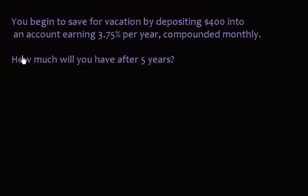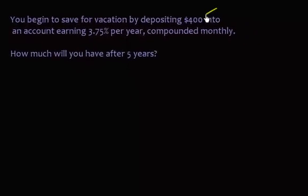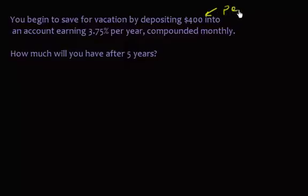OK, so our next example. You begin to save for a vacation by depositing $400 into an account earning 3.75% per year, compounded monthly. So how much will you have after five years? Oh, so depositing $400, sorry, per month. I've got to make that clear. So per month. Compounded monthly, how much do you have after five years? OK, so our formula is this.